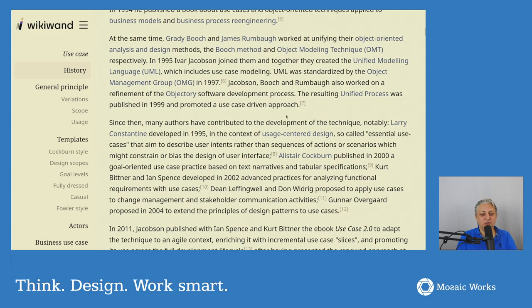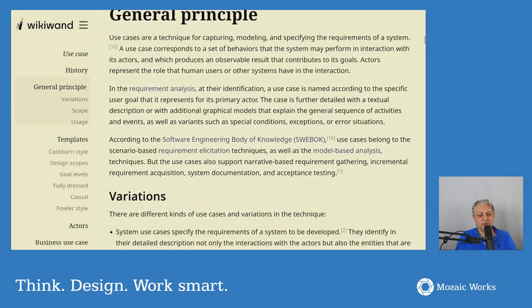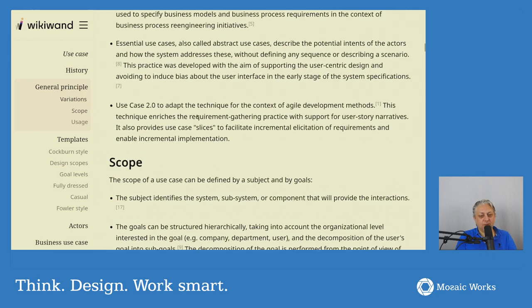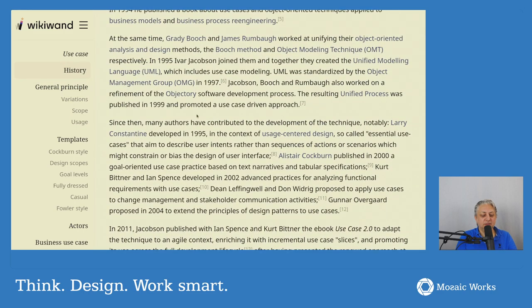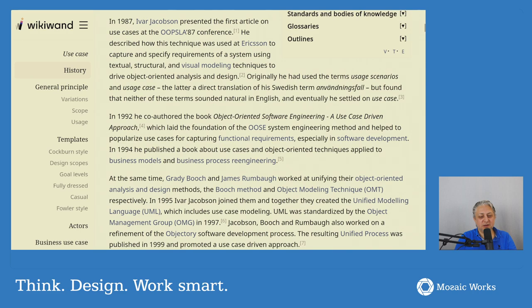Jacobson, Booch, and Rumbaugh also worked on a refinement of the Objectory software development process. The resulting Unified Process was published in 1999 and promoted the use case driven approach. Jacobson went on with the Rational Unified Process with RUP, and UML went on its own track. RUP was basically a methodology that could have been quite lightweight, but in reality, in most cases, it was implemented very heavily.